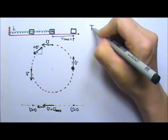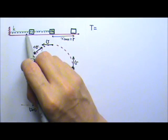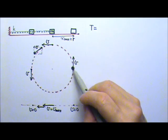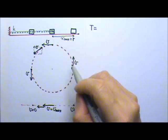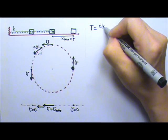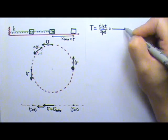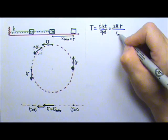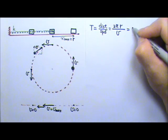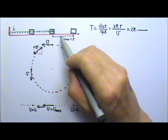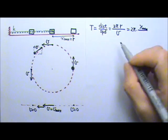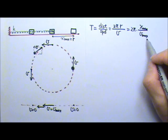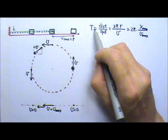Now we're going to use this matching circular motion to find the period of the oscillation. The period T is the time it takes for one complete oscillation, which equals the time it takes the object to go around one circle. That time is the distance traveled divided by the speed: 2πr divided by v. Since r is the amplitude x_max, and the speed of the matching circular motion equals the maximum speed v_max, the period is 2π times x_max divided by v_max.